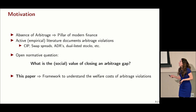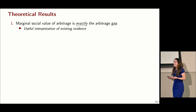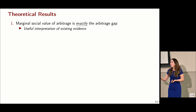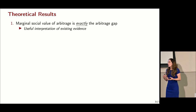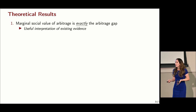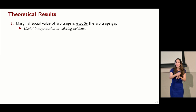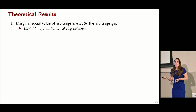Let me tell you a little about the results. The first result characterizes the marginal social value of arbitrage — what is the value in dollar terms of one more unit of arbitrage trade. We find that value is given by the arbitrage gap, or the basis. This is helpful because when we see big gaps, we might think those are associated with higher welfare costs. But the gap is exactly the marginal social value. So fluctuations in the basis correspond to fluctuations in the marginal value of arbitrage over time.